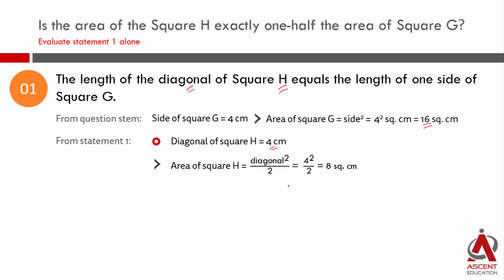Area of a square is a squared where a is the side of the square. Diagonal of a square is equal to root 2 times a, where a is the side. So area can be written as d by root 2 whole squared, which is nothing but d squared by 2. So area of any square will be equal to square of its diagonal by 2.